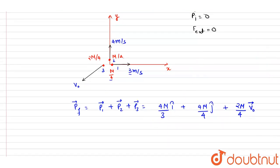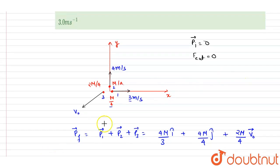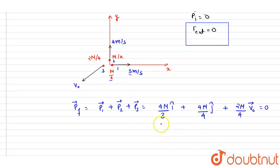So the momentum will remain conserved, so simply I will equate it with zero. Right, so if you see here, we can cancel out this m by 4. This is 3 by 4, so you can cancel out this m by 4 from each expression.